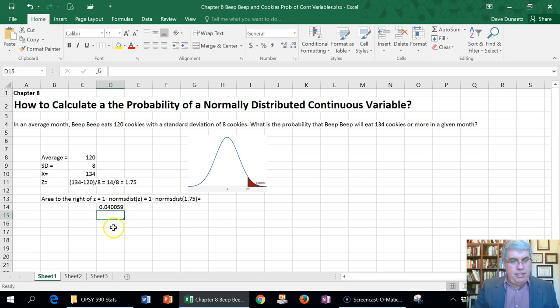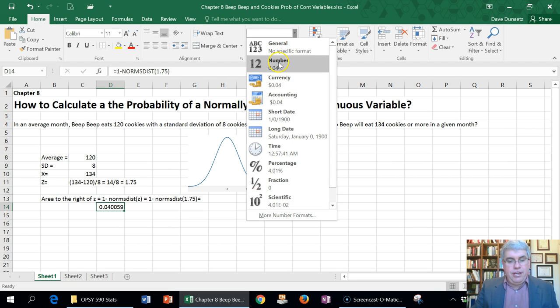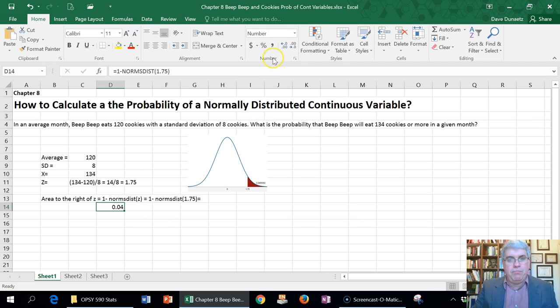And it does the calculation. And it's 0.040059. And we can round that down, go to general, and go to number, and we can give it one more decimal point, since it only has one significant figure there. 0.0040.